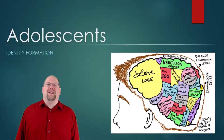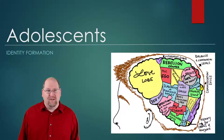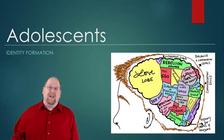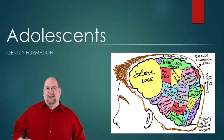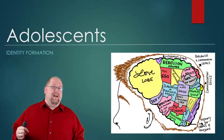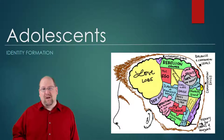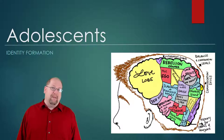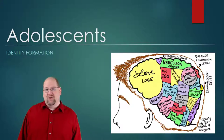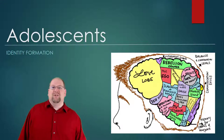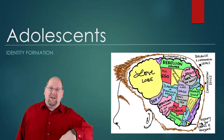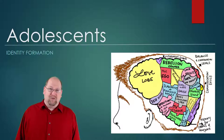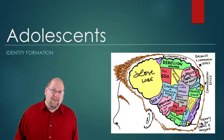Hey everybody, welcome to our next section on identity formation, dealing with our chapter 11 unit on adolescence. Today we're going to learn specifically about the different stages of identity formation and how you as teenagers kind of go through this cycle of trying to understand who you are, where you're going, and where you're going to finish up as far as understanding who you are. Make sure we have our notebook paper up and ready to take notes. There's more information on here than just what you see on the screen. Please make sure you get your distractions put away, and if you have any questions, put them in the comment box below and I'll get back to those. Let's get some learning.